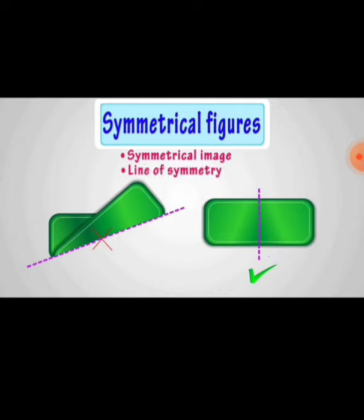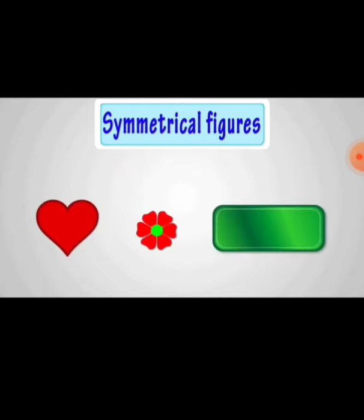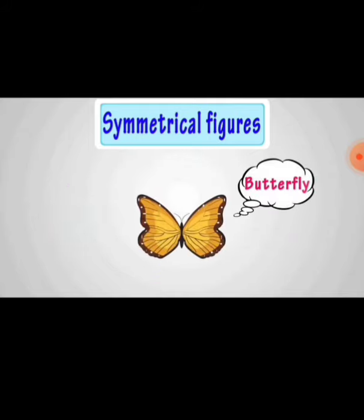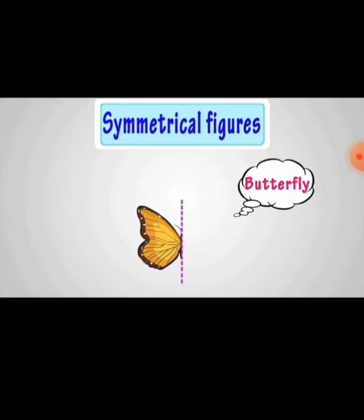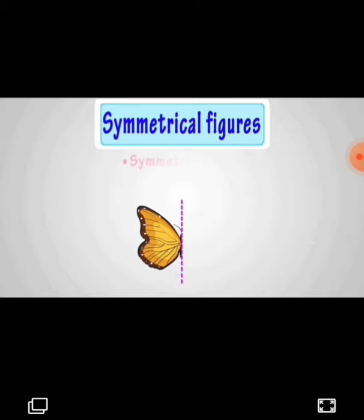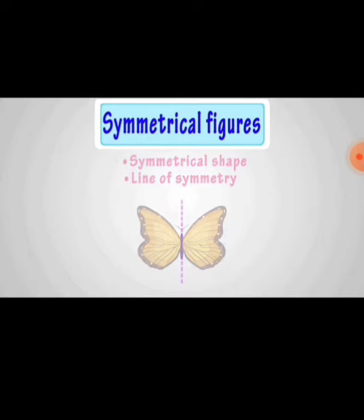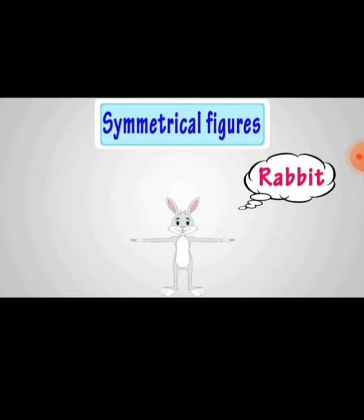Heart, flowers, and rectangles — these three figures are examples of symmetrical figures. Observe the butterfly here. A straight line is drawn on this figure. When the paper is folded along this straight line, one part will exactly coincide with the other part. This is a symmetrical figure.